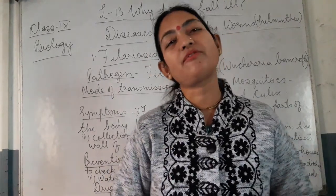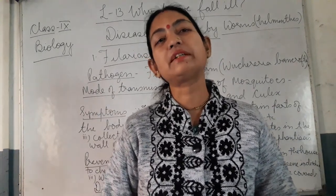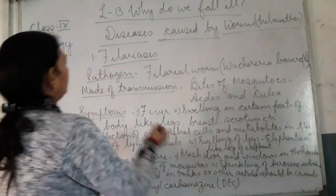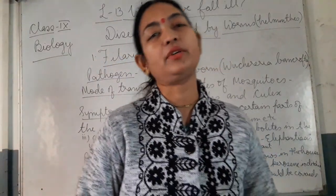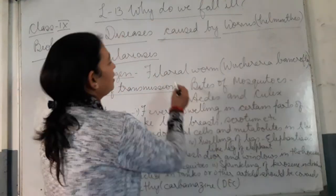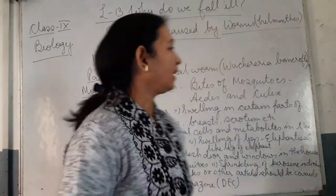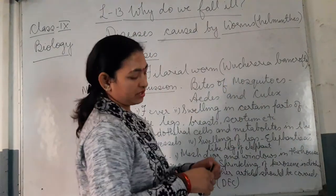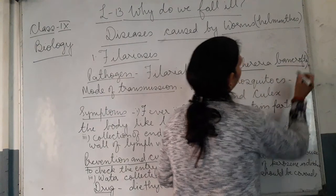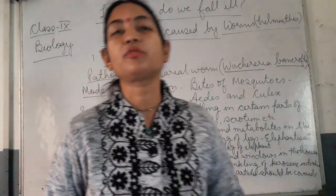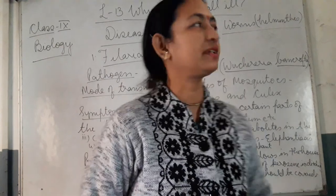Today we will discuss about filariasis, which is also called elephantiasis. The pathogen which causes filaria or elephantiasis is called the filarial worm, which belongs to the helminthus group. The scientific name is Wuchereria bancrofti — that is the scientific name of this filarial worm that causes filariasis or elephantiasis.